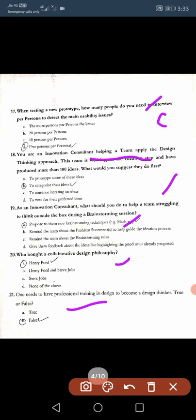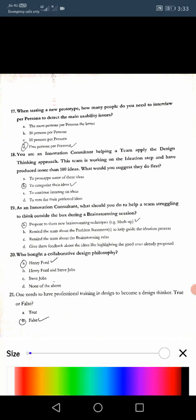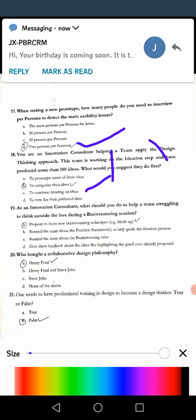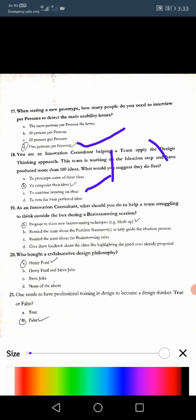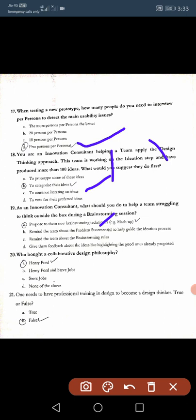Seventeenth: When testing a new prototype, how many people you need to interview per persona to detect the main usability issues? Remember it is five, it's not more, it is only five. Eighteenth: You are an innovation consultant helping a team apply a design thinking approach. This team is working on the ideation step and have produced more than 100 ideas. What would you suggest to do first? B, to categorize these ideas. You are having n number of ideas, we will categorize the ideas. Nineteenth: As an innovation consultant, what would you do to help a team struggling to think outside the box during the brainstorming session? We will give brainstorming techniques, so 19A.